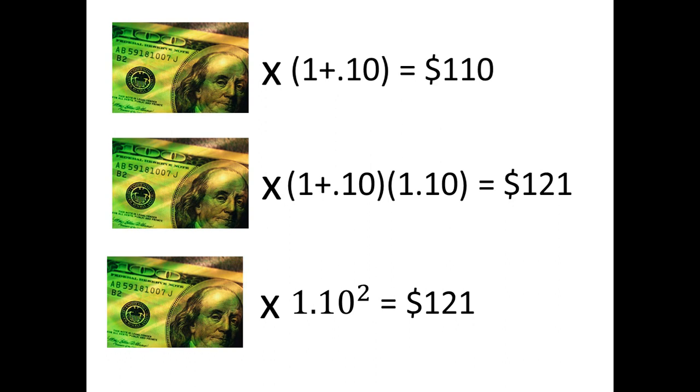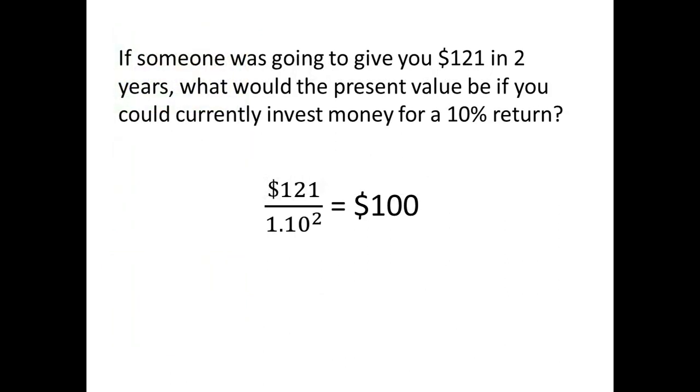If someone told you they would give you $121 two years from today, how would you figure out what that $121 would be worth today? If the interest rate is 10% and you would receive this payment two years from today, then the present value would be calculated as 121 divided by 1.1 to the second power, and this would give you an answer of $100.